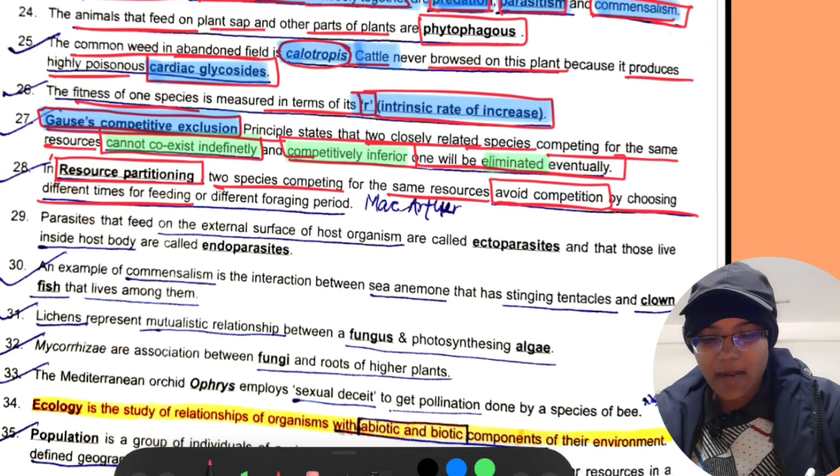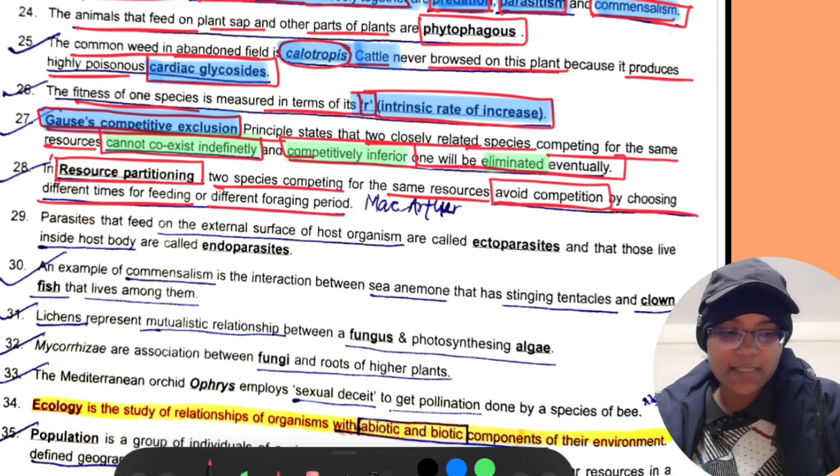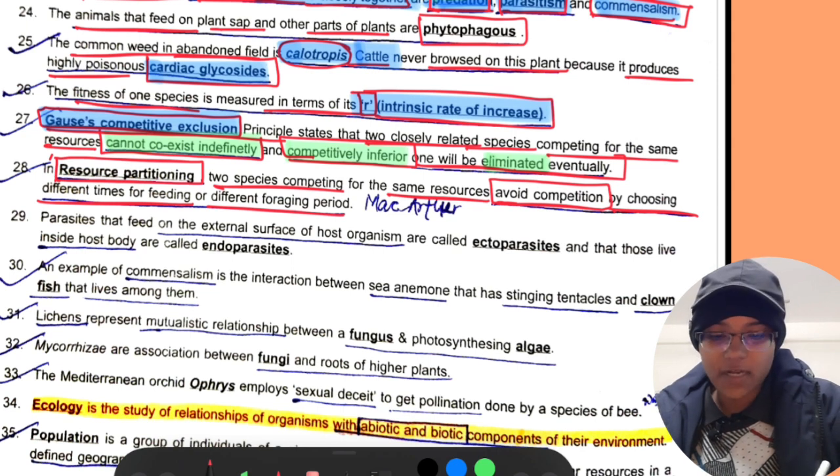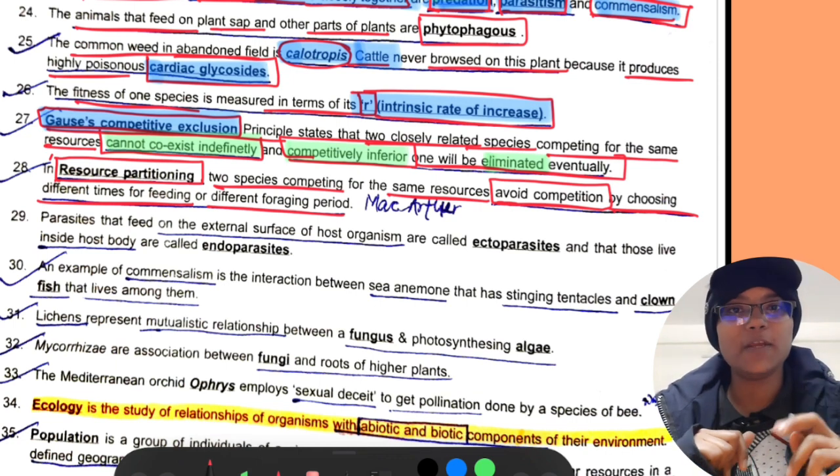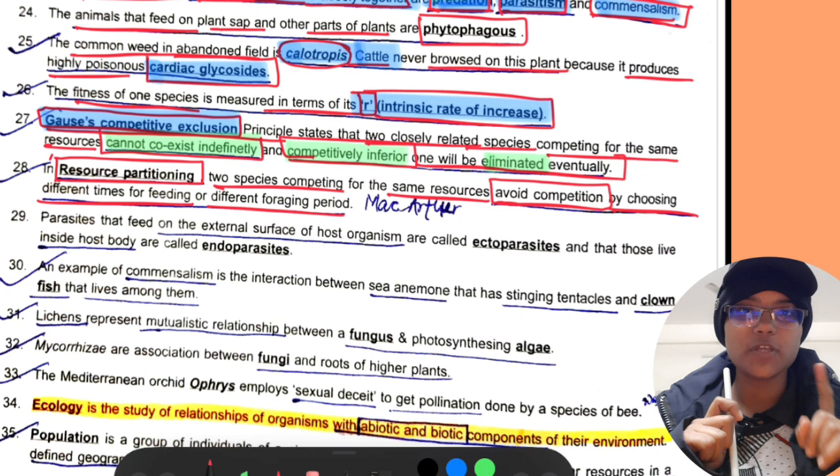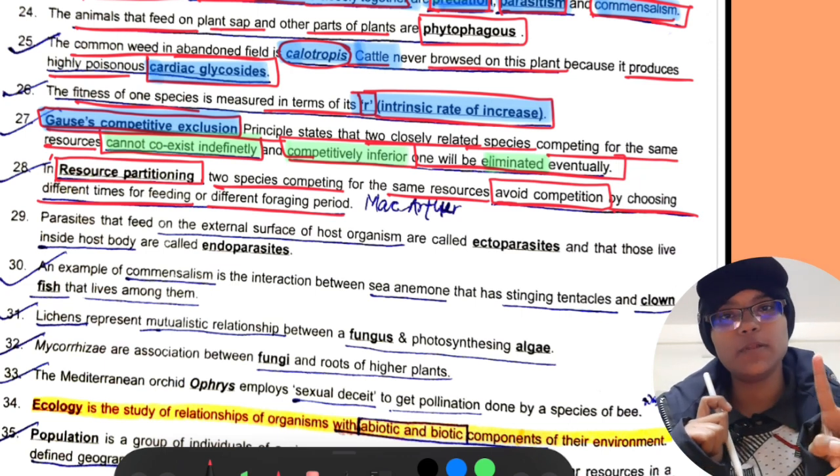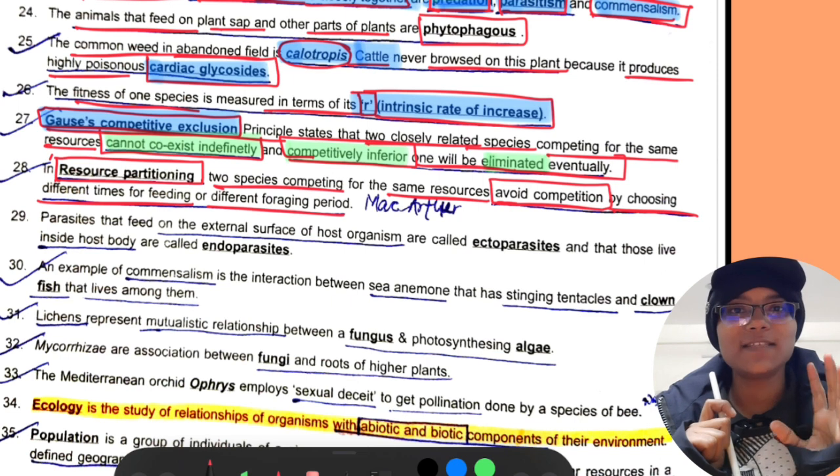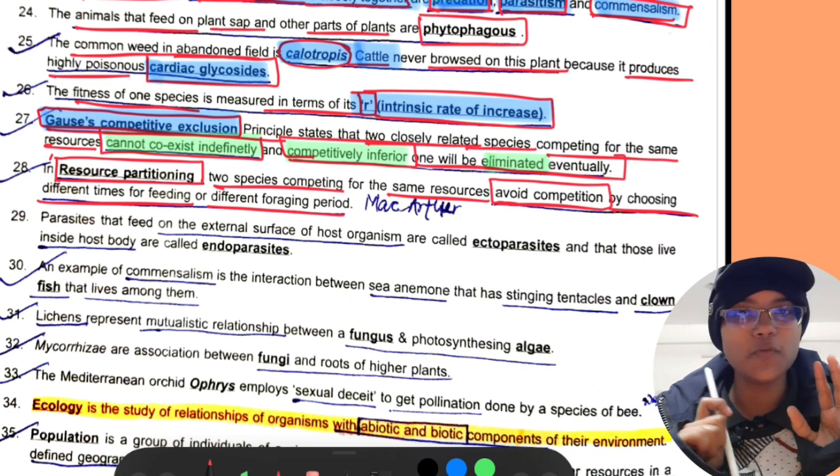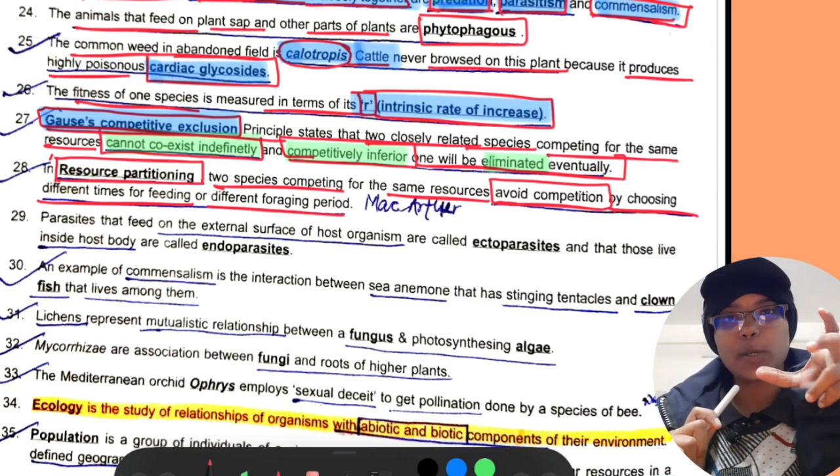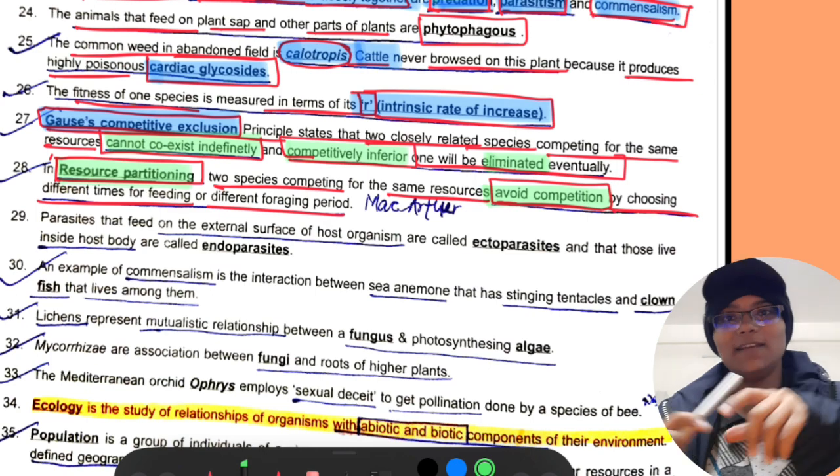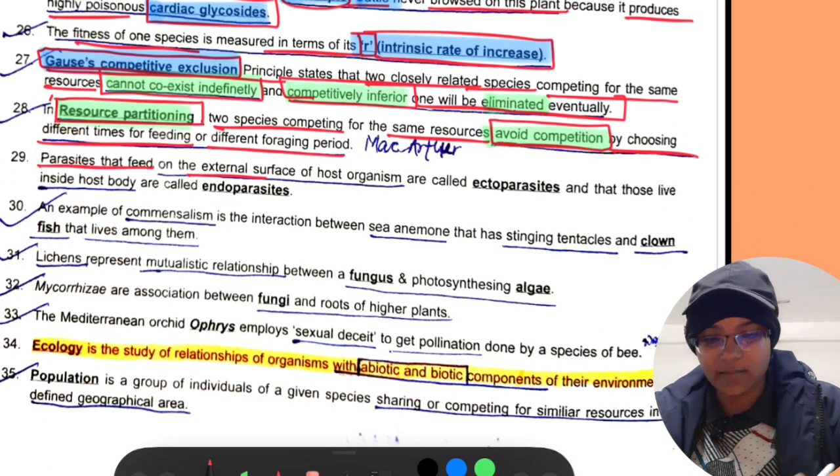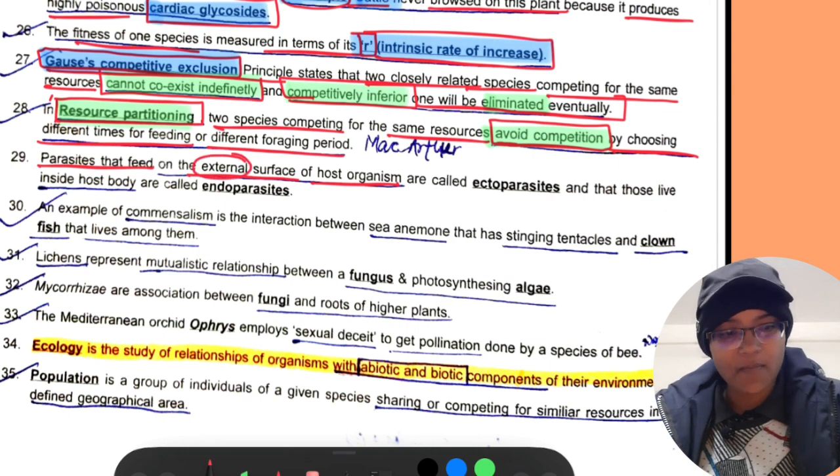In resource partitioning, two species competing for the same resources avoid competition by choosing different times for feeding or different foraging periods.